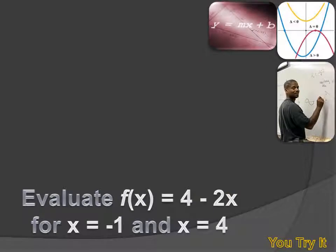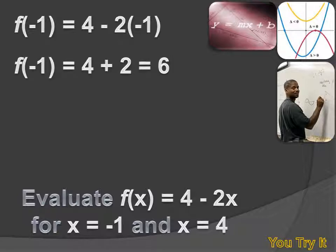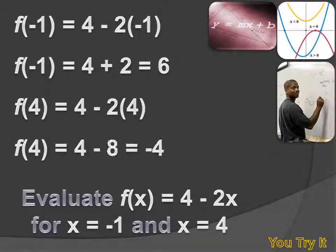You try this one. Let's evaluate function of x equals 4 minus 2x for an x value of minus 1. All we're going to do is substitute minus 1 for that x, and we've got function of minus 1 equals 4 minus 2 times minus 1, or function of minus 1 equals 6. How about when x equals 4? Then we've got the function of 4 equals 4 minus 2 times 4, or the function of 4 equals minus 4.